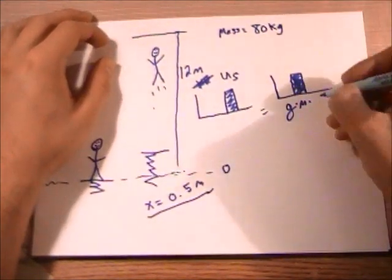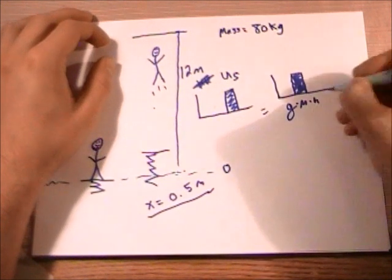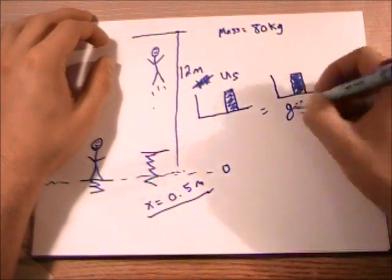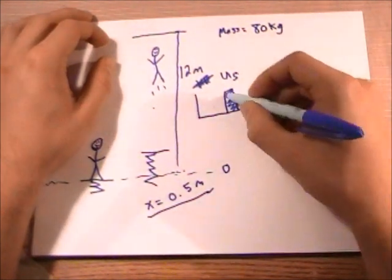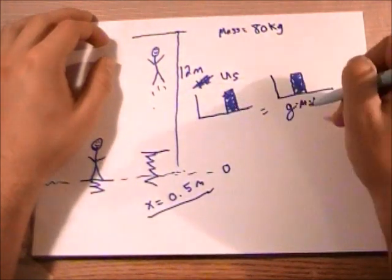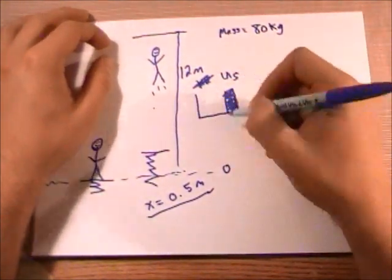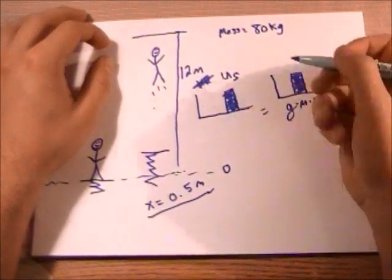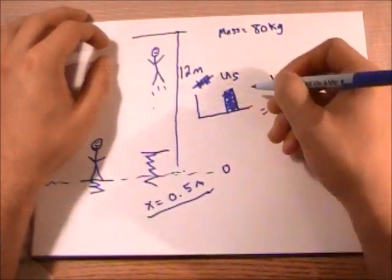And then times your height here. So that's your gravitational potential energy that you want. So you know all these numbers but you want to buy a spring that's going to be strong enough to launch you 12 meters in the air.